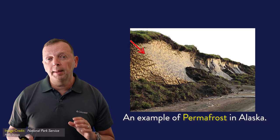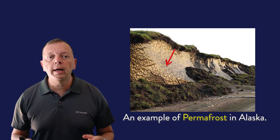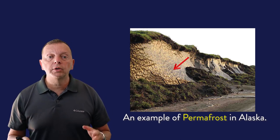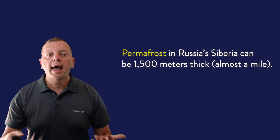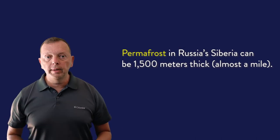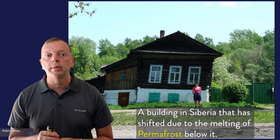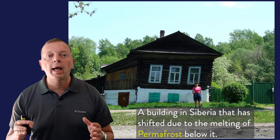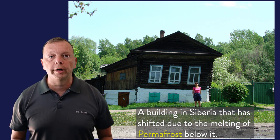In Alaska, the permafrost could be up to 740 meters thick, but the permafrost in Russia's Siberia is over twice as thick at 1,500 meters. When we examine life in Russia later in this course, we're going to see how this permafrost creates problems for constructing buildings and how people have adapted to build on it.